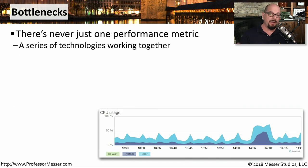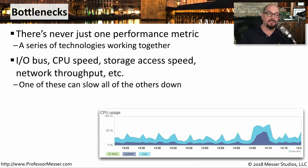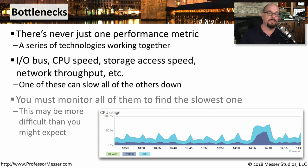Whenever someone says the network is slow, what they're really saying is that any one of many devices plugged into the network may be having some type of problem somewhere inside of them. There's never just one single performance metric you need to examine — you need to look at every single step along the entire path. This means you may need to examine the I/O bus of a server or the CPU speed, or look at the access to a switch or examine what the router performance might be, to really get an understanding of the performance of traffic going across the network. You'll need to look at statistics in the server, the routers, the switches, the networks, and the workstations.